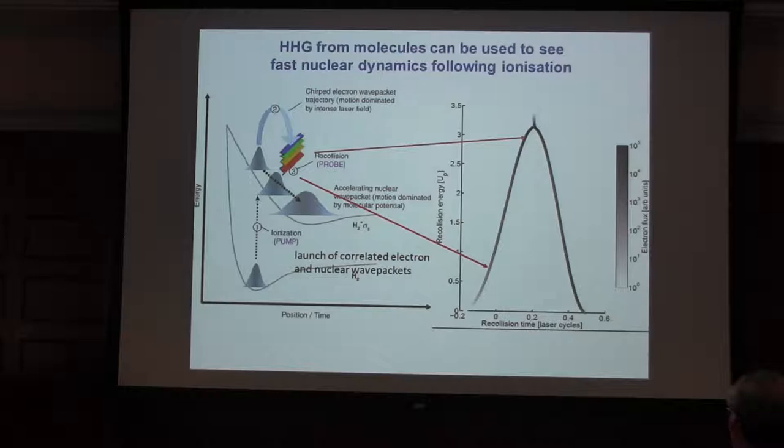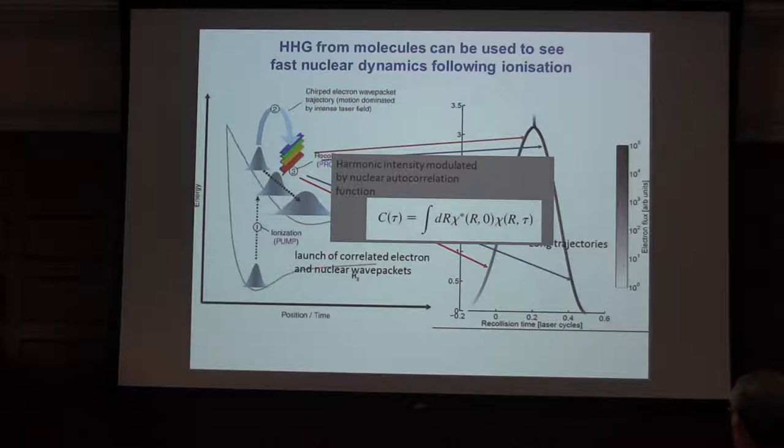One possibility, as we just said, is: what we've used up to now is short trajectories. What if we use also the long trajectories? We can sort of double our timescale and also by using short and long trajectories you can, for a given harmonic order where the dipole moments and other things will be the same, you can make two time comparisons and maybe get information out that way.